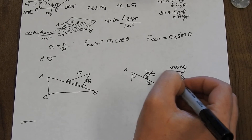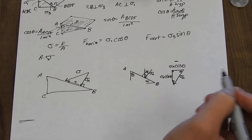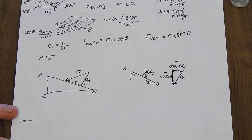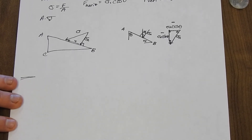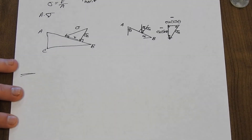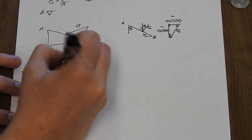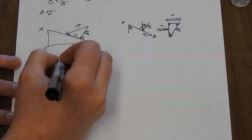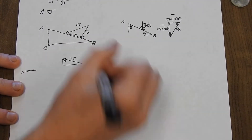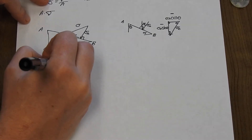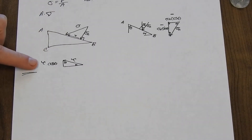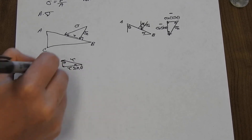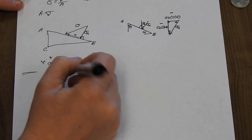Now let's decompose the shear stress. Shear stress is also not oriented perfectly horizontally or vertically, so we decompose that vector. By similar triangles, the angle is theta, so the horizontal component of shear stress is cosine theta times the shear stress — a positive term — and the vertical component is sine theta times the shear stress, oriented to the left — a negative term.